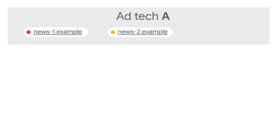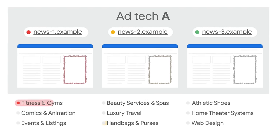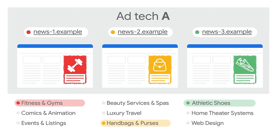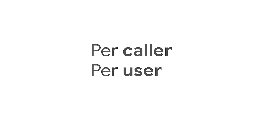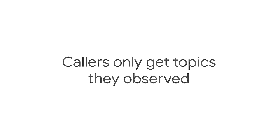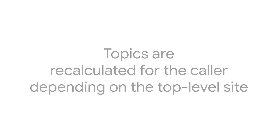Topics for a user are recalculated for a caller depending on the top-level site. For example, if ad tech A has a presence on news1.example, news2.example, and news3.example, topics returned to ad tech A for the current user will be recalculated on each site. This means a caller is highly likely to get different topics for a user on different top-level sites, making it harder for a caller to identify a user by their topics. To sum up: topics are provided per caller, per user, per epoch. The Topics API only returns topics a caller has observed, up to three topics — one for each of the previous three weeks of browsing activity, randomly selected from the top five for that week. The topics returned to a caller are recalculated for each top-level site.